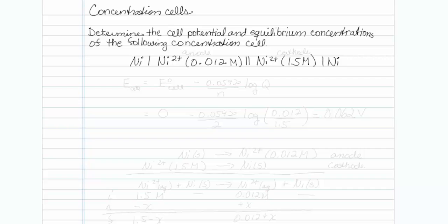This is how to do a redox problem with concentration cells. Determine the cell potential and equilibrium concentrations of the following concentration cell. Now what you might notice is that both my anode and my cathode involve nickel 2 plus nickel combinations. That's what a concentration cell is.